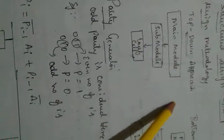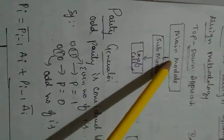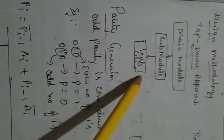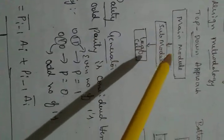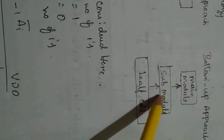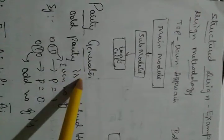In structural design, the design methods are the top-down approach and the bottom-up approach. In the top-down approach, the main model is divided into sub-models and then leaf cells. In the bottom-up approach, it starts from the leaf cells, goes through sub-models, and then reaches the main model.